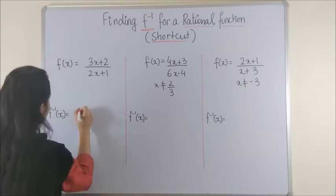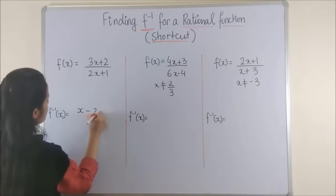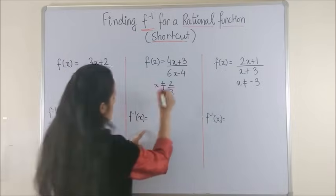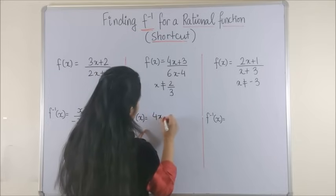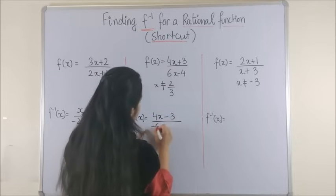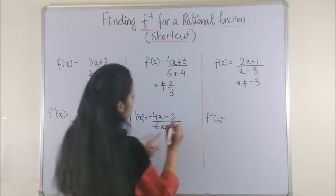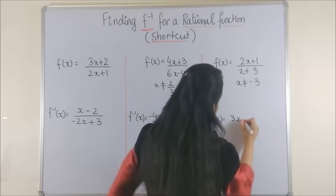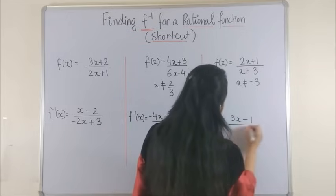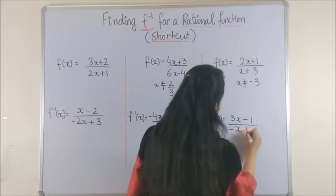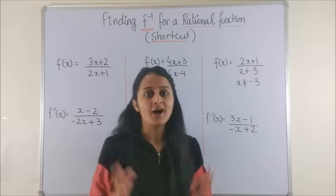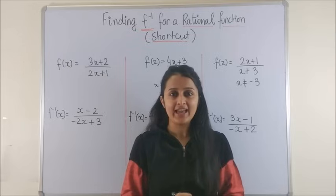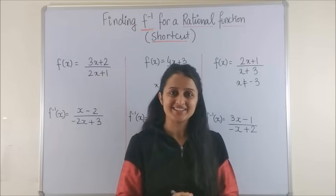So the answer to the first one would be (x minus 2) over (minus 2x plus 3). The second one would be (4x minus 3) over (minus 6x plus 4). And the third one should be (3x minus 1) over (minus x plus 2). Wondering how I managed to do it so quickly? Watch this video till the end as I reveal the secret. Let's get started.